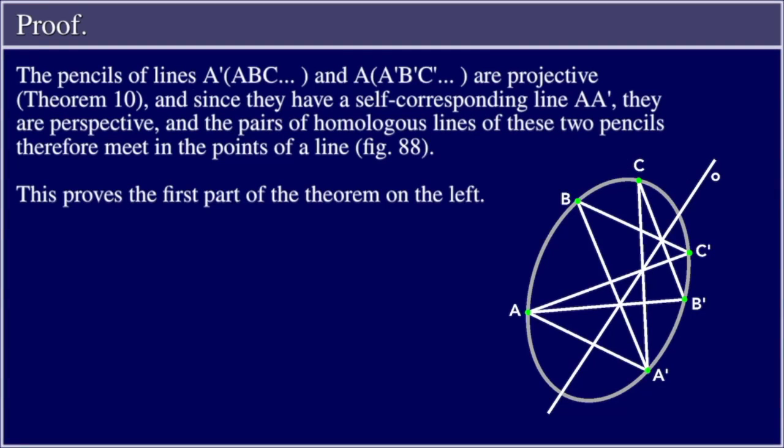Proof: The pencils of lines a' with a, b, c, ... and a with a', b', c', ... are projective by Theorem 10, and since they have a self-corresponding line aa', they are perspective, and the pairs of homologous lines of these two pencils therefore meet in the points of a line. (Figure 88.)